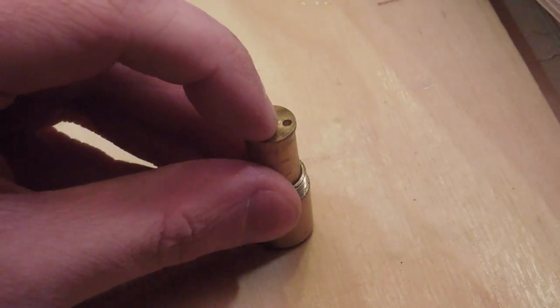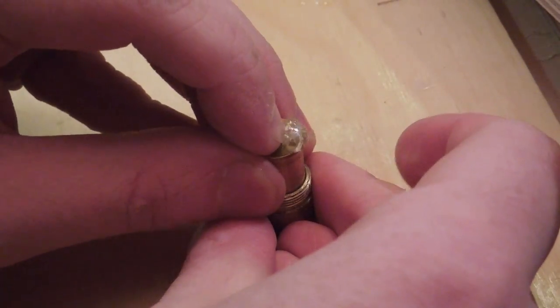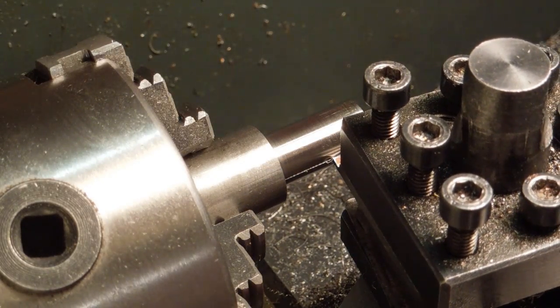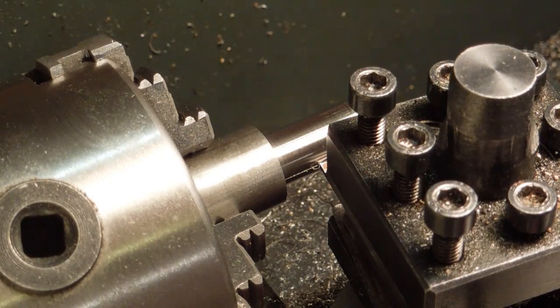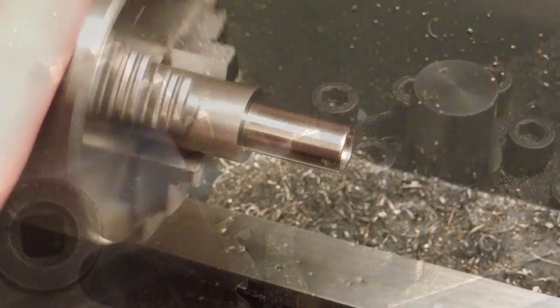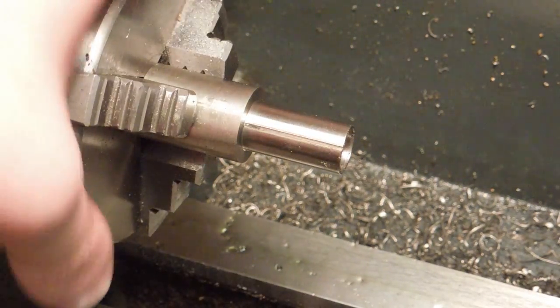The biggest problem I had with the original lighter was the insert acting like a piston and forcing most of the fuel out when pushed into the body. To prevent this, I used a sideways parting tool and moved the carriage to cut 3 grooves along the insert. This will allow the air to escape around it as it's pushed in, rather than through the hole where the wick goes.